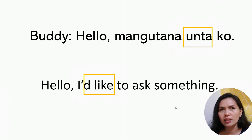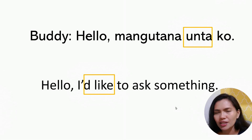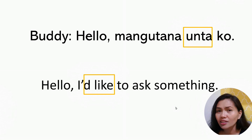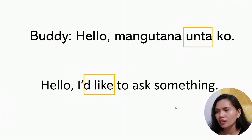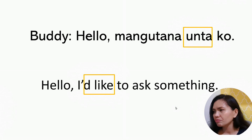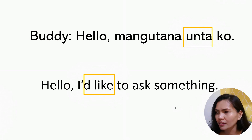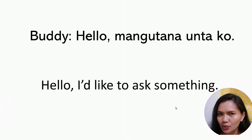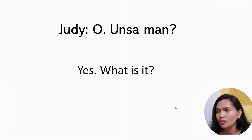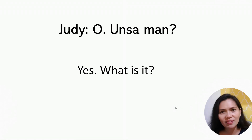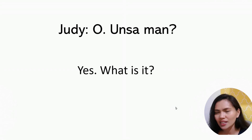Unta is added to make the phrase softer — 'I'd like to ask.' Mongotana unta ko means 'I'd like to ask something.' The local Judy would say: 'Oh, unsa man?' — meaning 'What is it?' This phrase unsa man is very common.